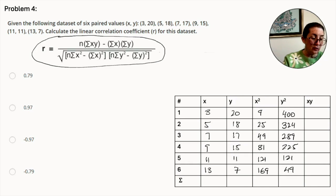Now x times y. 3 times 20 is 60. 5 times 18 is 90. 7 times 17 is 119. 9 times 15 is 135. 11 times 11 is 121. And 13 times 7 is 91. Now we add up each of the columns as follows. So the x column, 48. The y column, 88. x squared, 454. Y squared, 1,408. xy, 616.